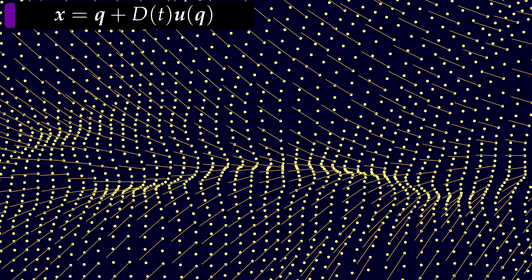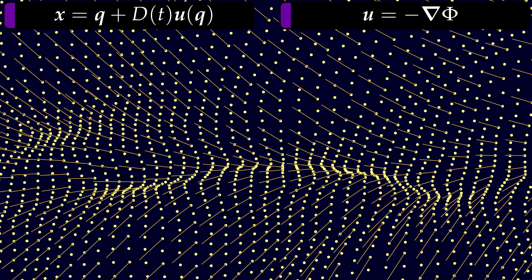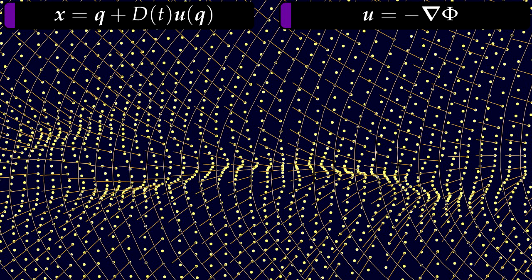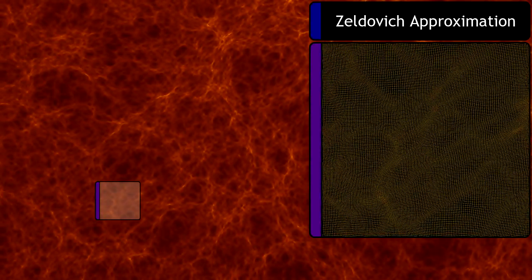The velocity, u, is the gradient of the potential field, phi, which in turn is fully determined by the initial field of density fluctuations. This is known as the Zeldovich approximation. It predicts the formation of a network of sheets and filaments.